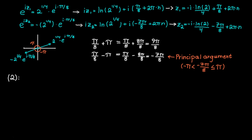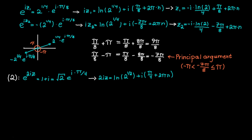Now for the easier approach: with e raised to the power 2ic equal to 1 plus i, we rewrite in polar form and take the logarithm of both sides directly. This gives c equal to minus i times pi over 4, which is the principal argument, plus 2pi times n — then divide both sides by 2. The result is c equal to minus i times ln of 2 to the 1 over 4, plus pi over 8, plus pi times n. This is exactly the same solution as before, just written on one line and obtained more quickly.